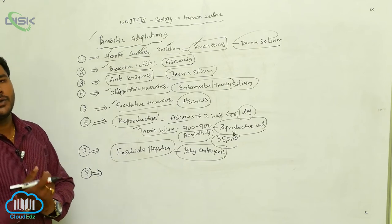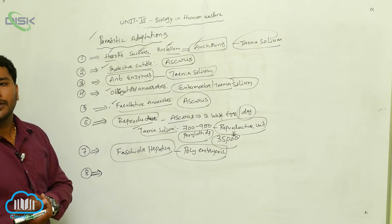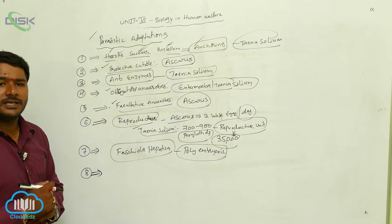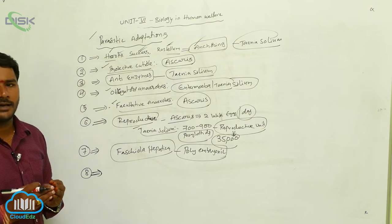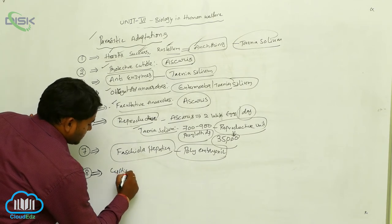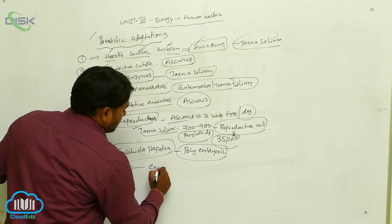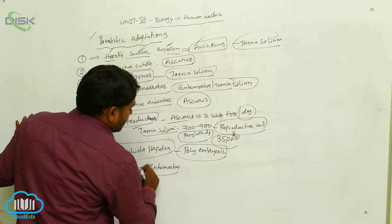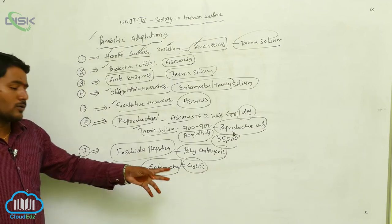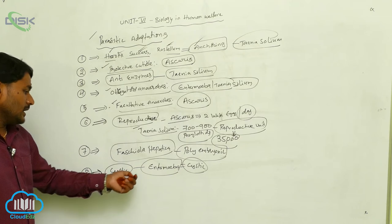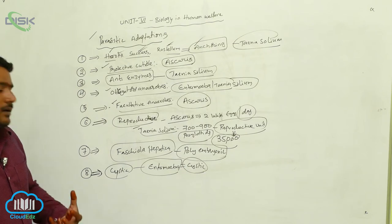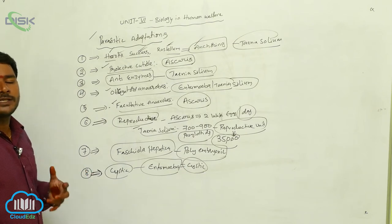Some parasites, in order to withstand unfavorable conditions in the host body, undergo cystic forms. For example, Entamoeba histolytica undergoes a cystic stage whenever the host environment is not suitable. In this cystic stage, it is able to survive the conditions created by the host.